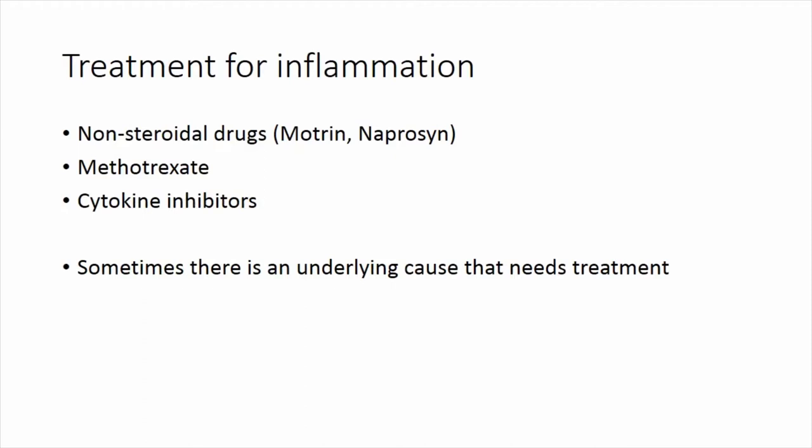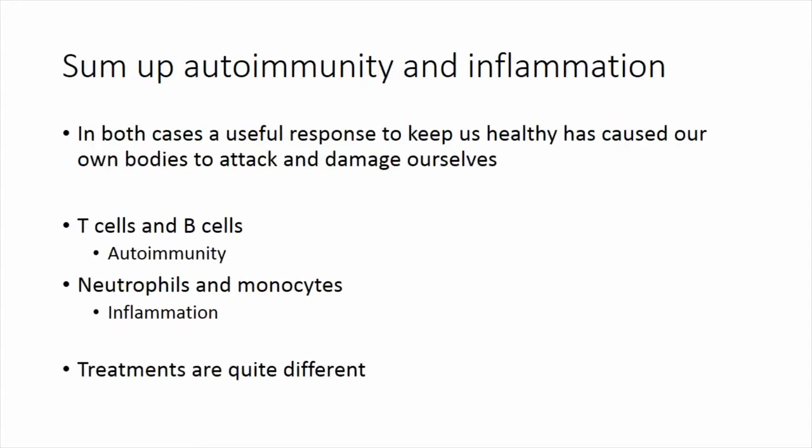How do we treat inflammation? There are non-steroidal anti-inflammatories like Motrin and Naproxen. There's methotrexate. But today, because we are at the dawn of precision medicine for immune deficiencies, we can sometimes target those cytokines—those inflammatory hormones—with medications directed to them specifically that act like a sponge to soak them up. When it's T cells and B cells going wrong it's autoimmune disease; when it's neutrophils and monocytes going bad it's inflammation. The treatments are correspondingly quite different.